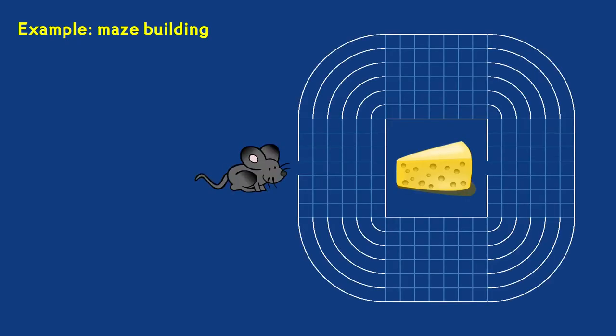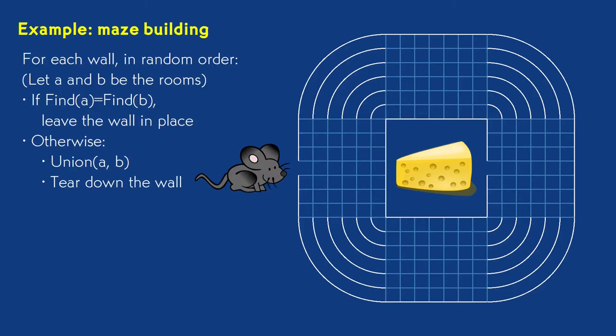We'll begin with some unchanging stuff. The maze will have outside walls, a central room, and a few little curvy passages. We'll put a hungry mouse outside and some tasty cheese at the center. We'll also build a wall everywhere that a wall might go. We'll define the maze by tearing walls down.